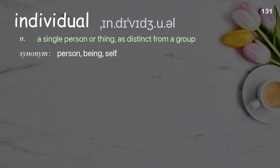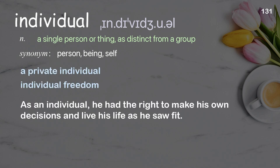Individual: a single person or thing as distinct from a group. Examples: a private individual, individual freedom. As an individual, he had the right to make his own decisions and live his life as he saw fit.